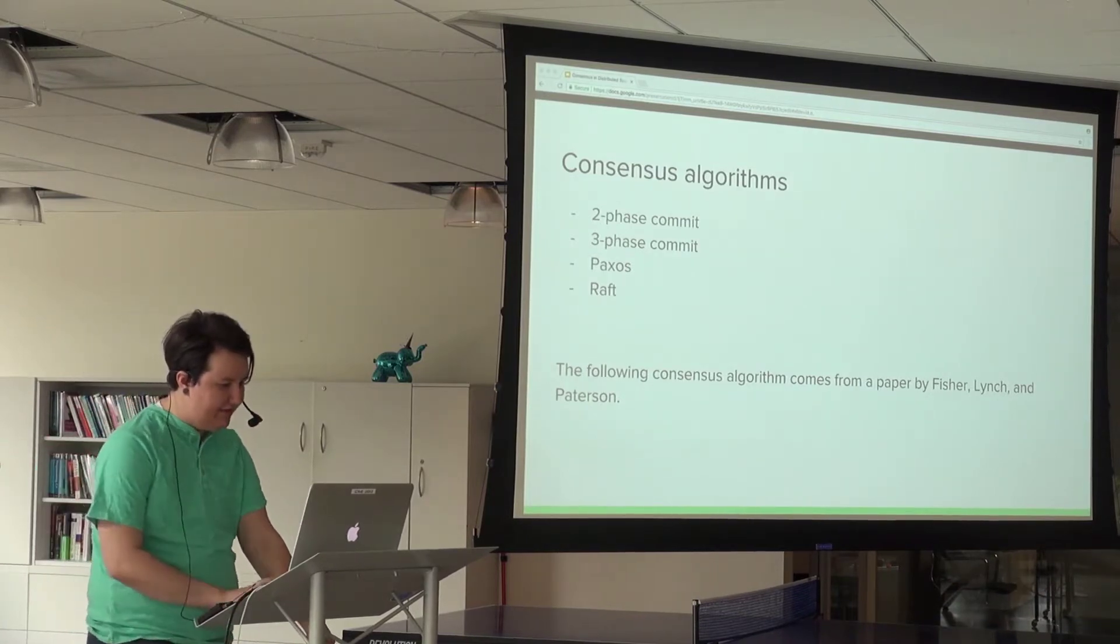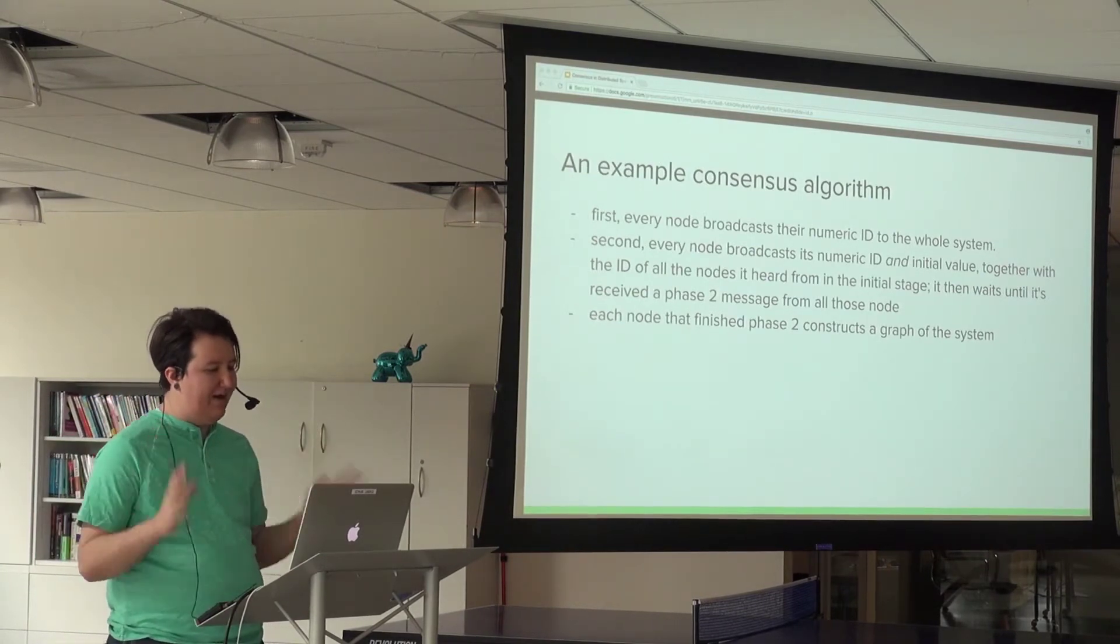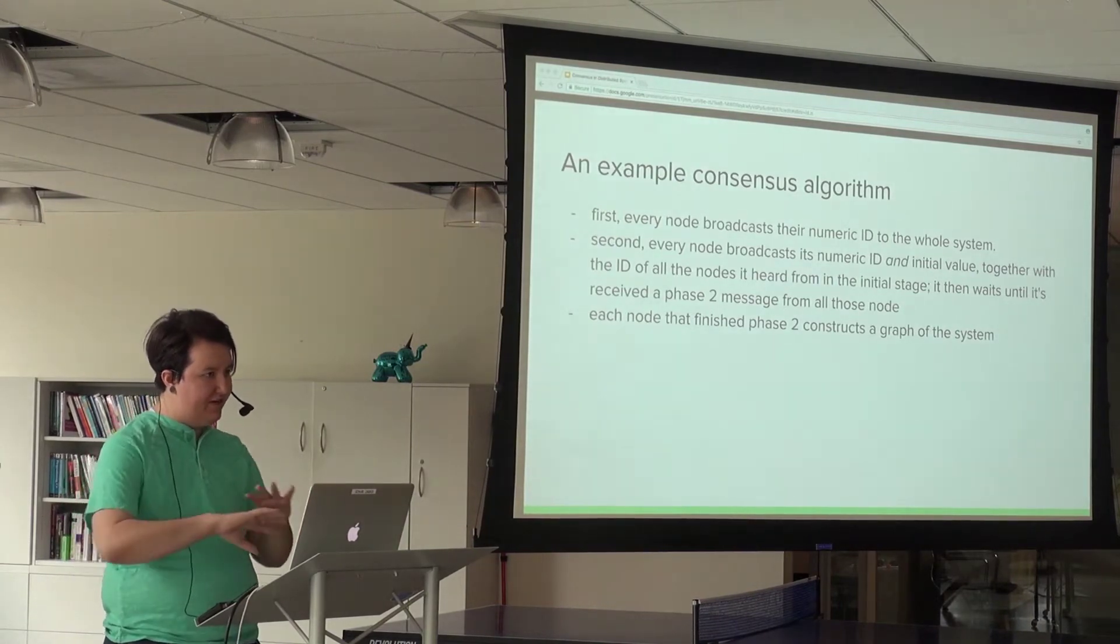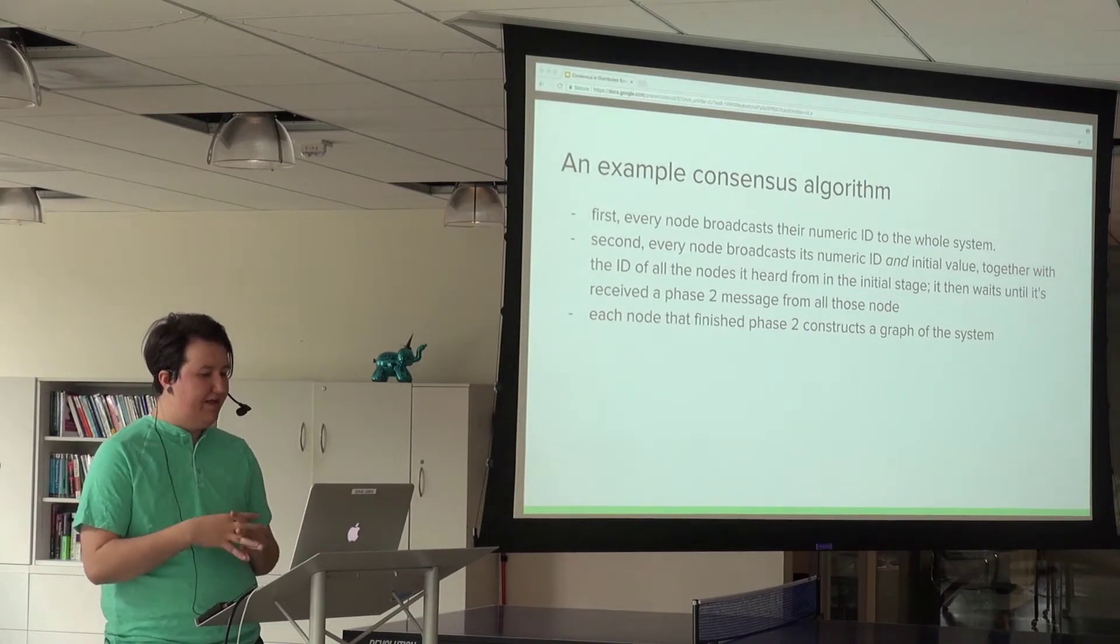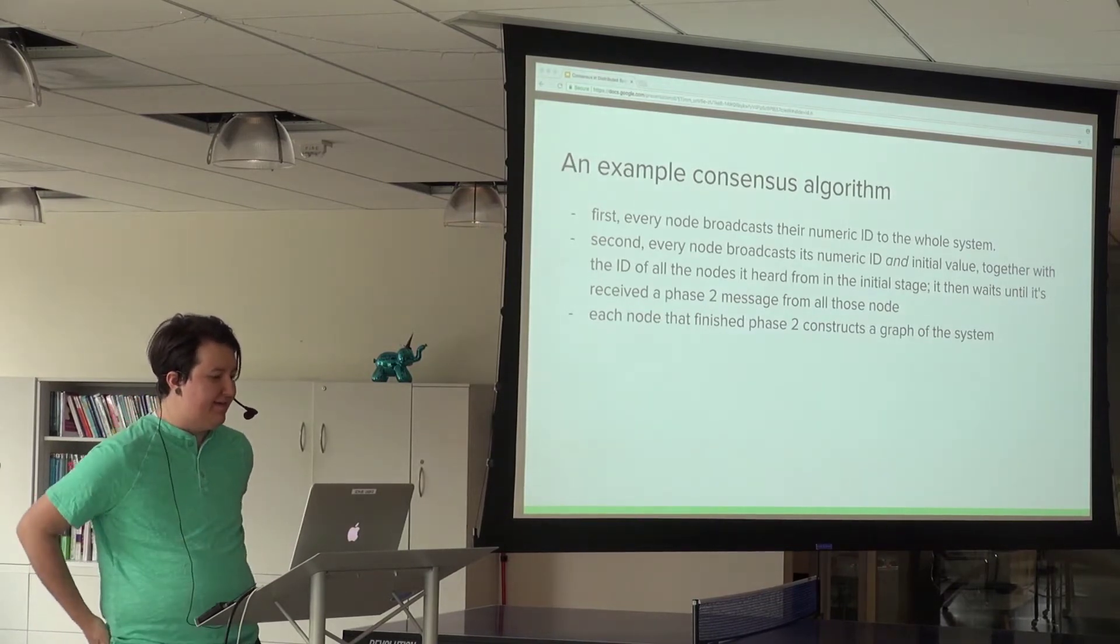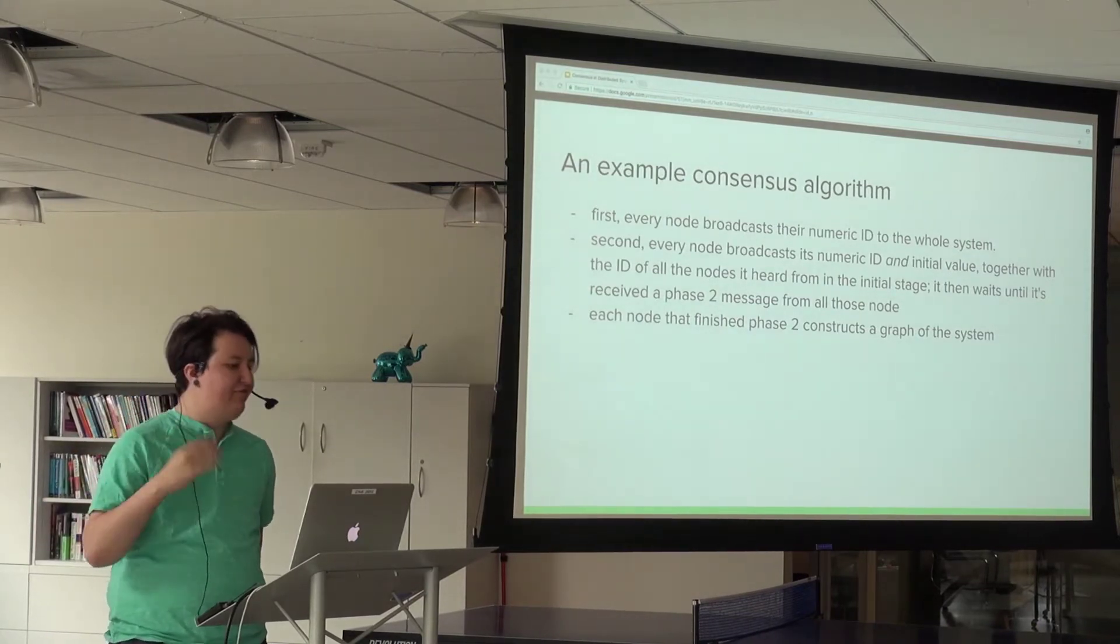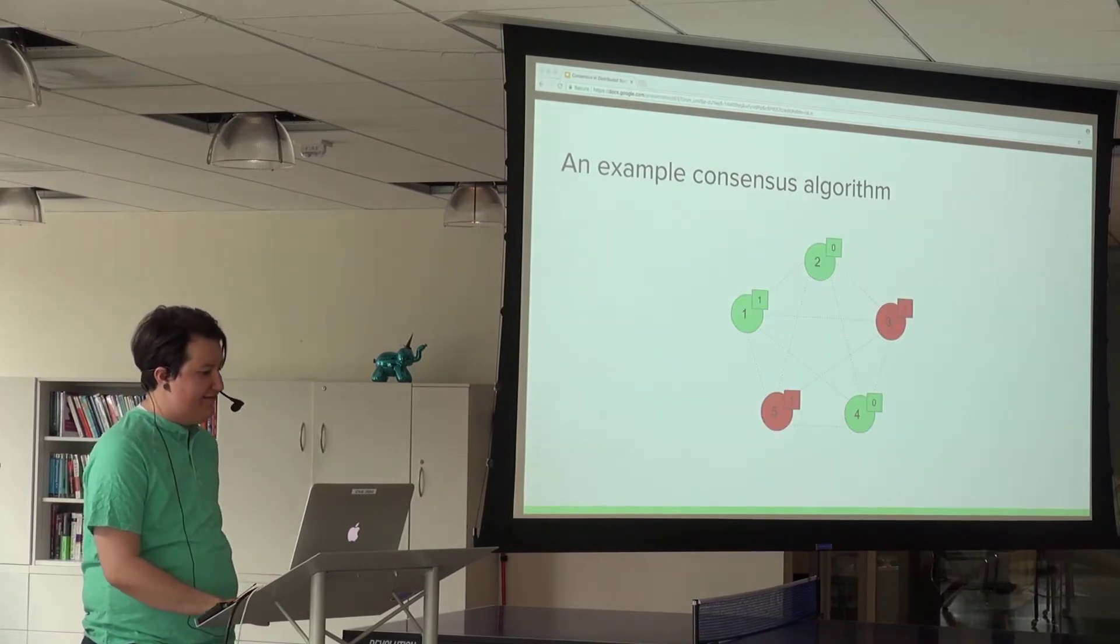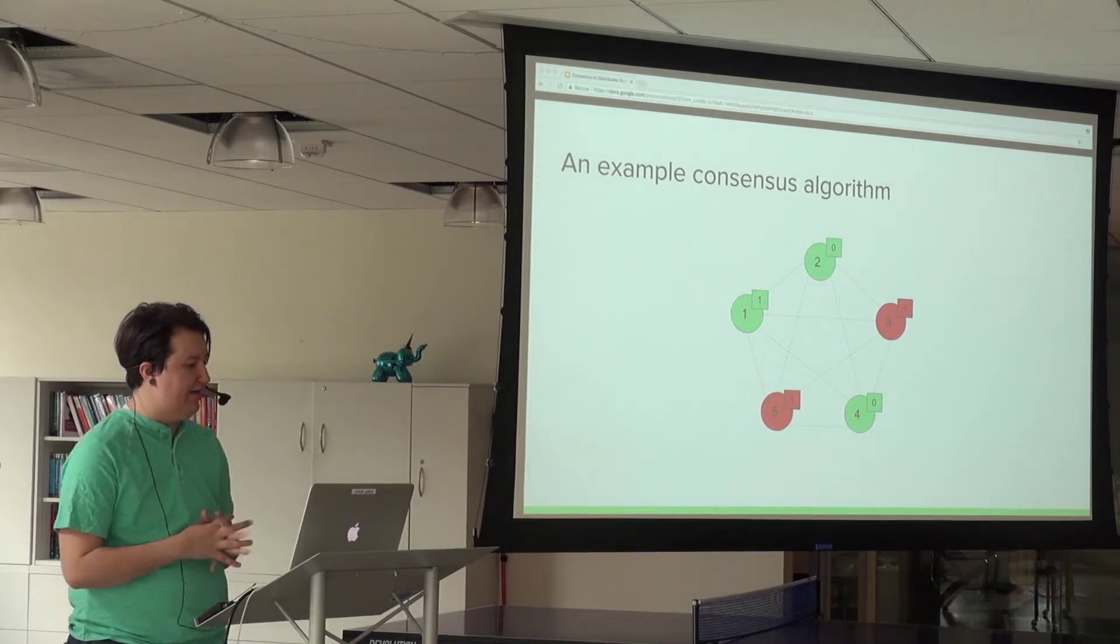The basic outline of this consensus algorithm: we have a distributed system where every node has a potentially different initial value. They all have an identical function which, given all the initial values the node is aware of, will decide on a final value. Each node starts out by broadcasting their node ID and initial value.